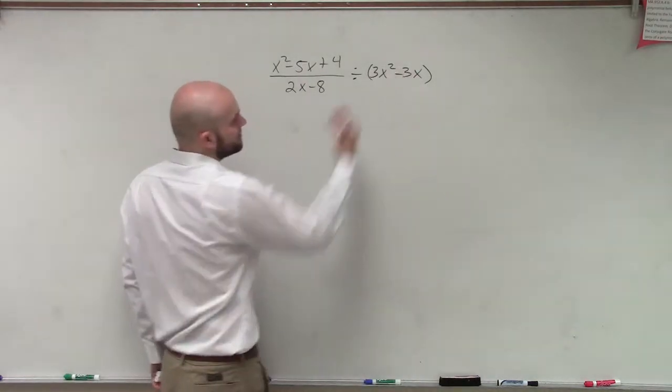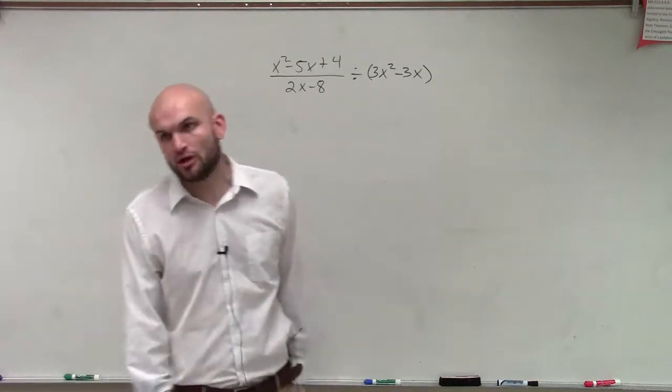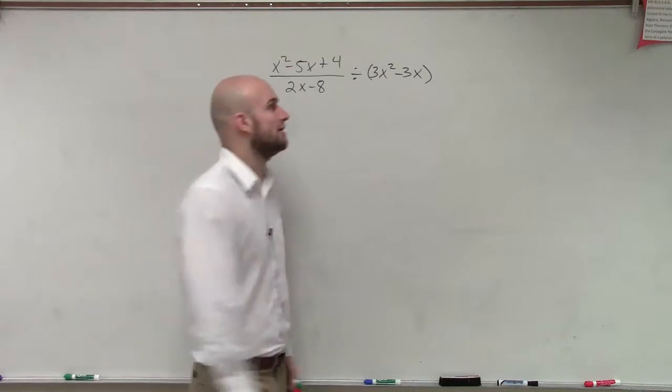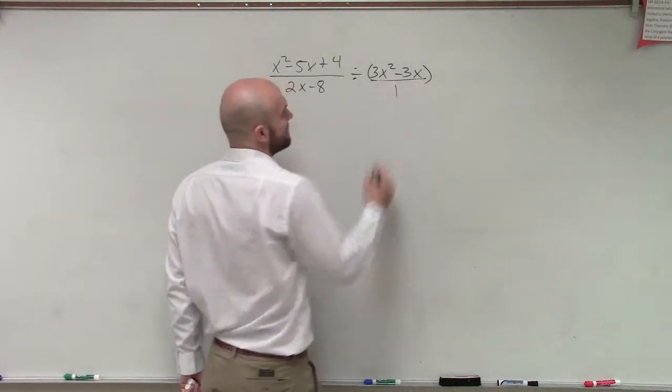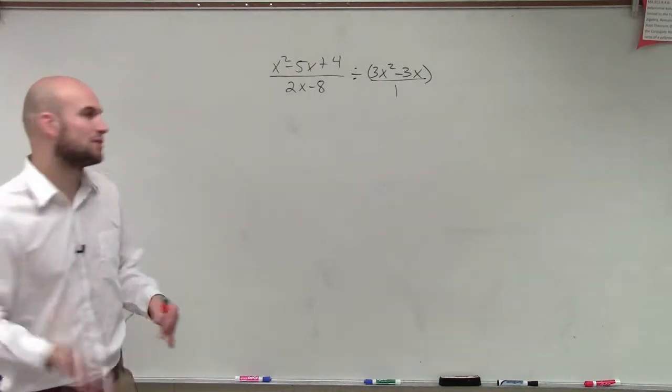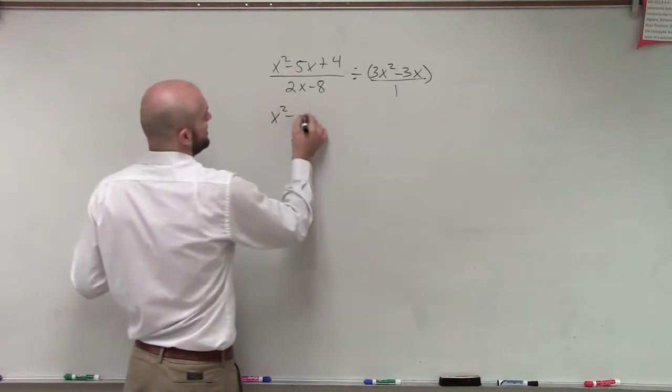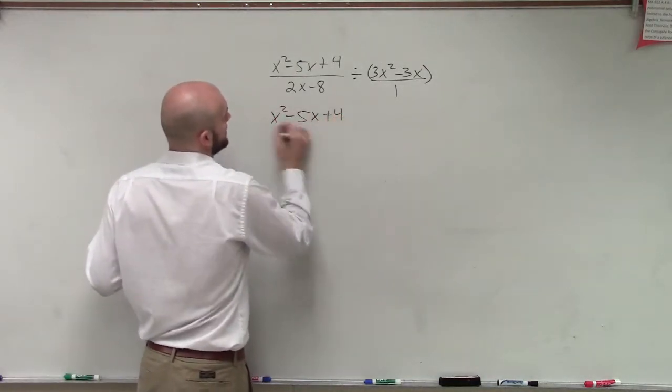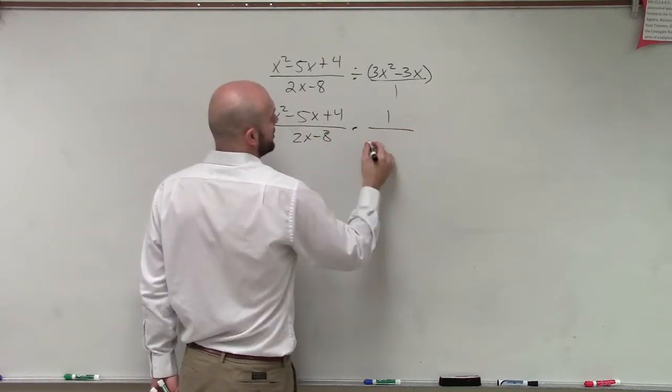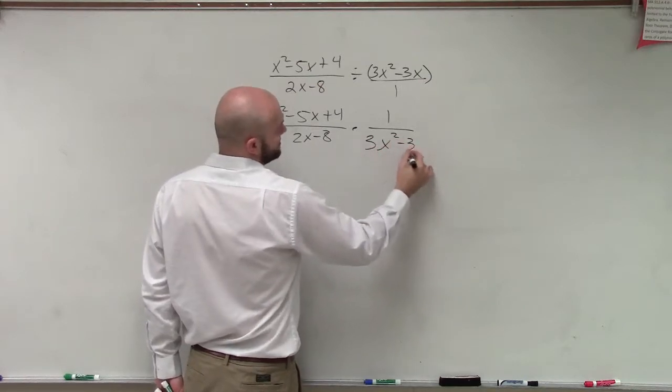So we've got to remember, we look at this and say, well, what's the reciprocal of 3x squared minus 3x? 1 over that, right? Because this can be written as a fraction, as that being the numerator and 1 being the denominator. So the reciprocal, we can write as x squared minus 5x plus 4 divided by 2x minus 8 times the reciprocal of 3x squared minus 3x.